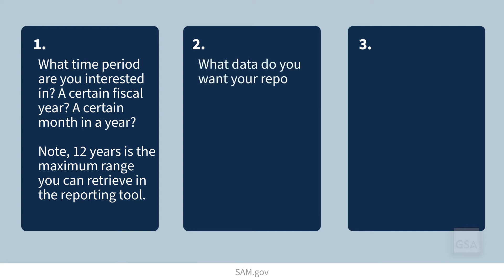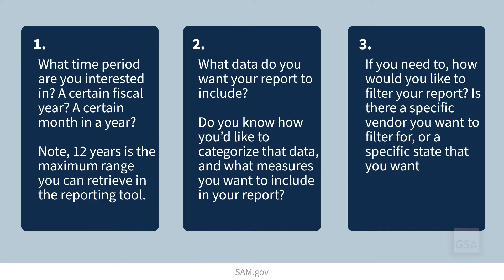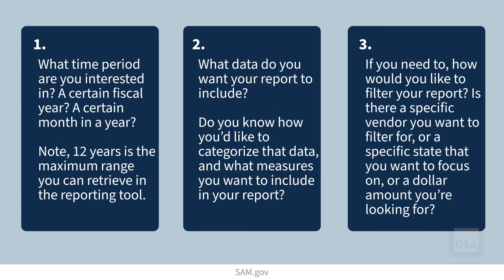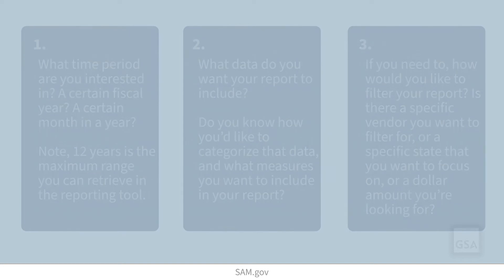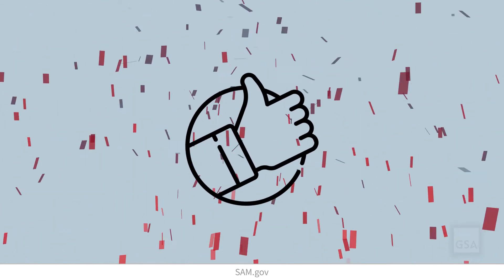Number two, what data do you want your report to include? Do you know how you'd like to categorize that data and what measures you want to include in your report? And number three, how would you like to filter your report? Is there a specific vendor you want to filter for? Or a specific state that you want to focus on? Or a dollar amount that you're looking for? Once you have the answers to these questions, you are ready to start building your ad hoc report.